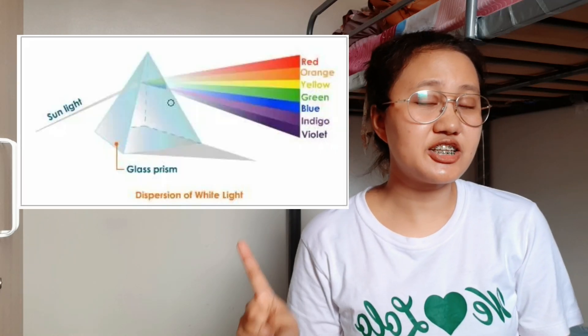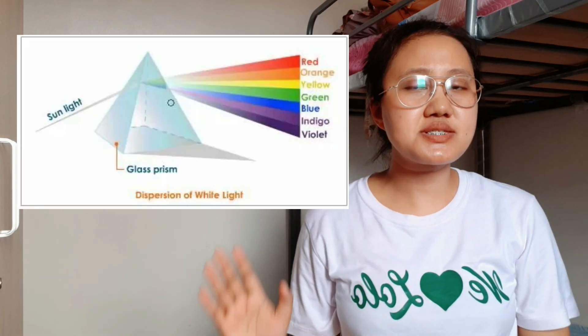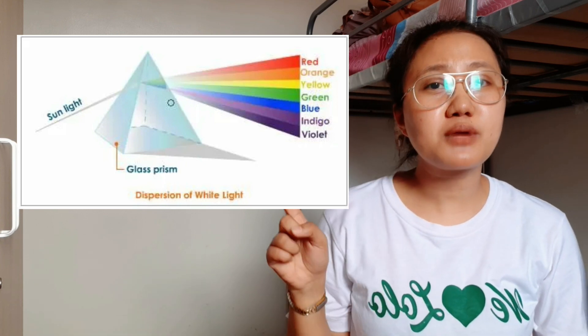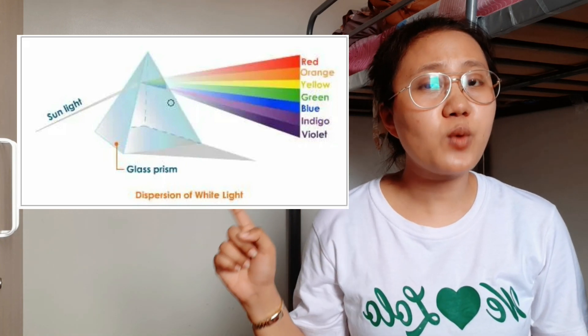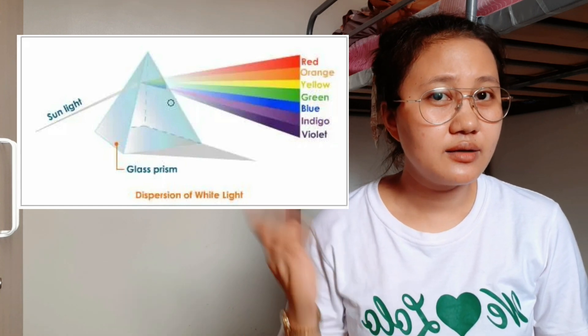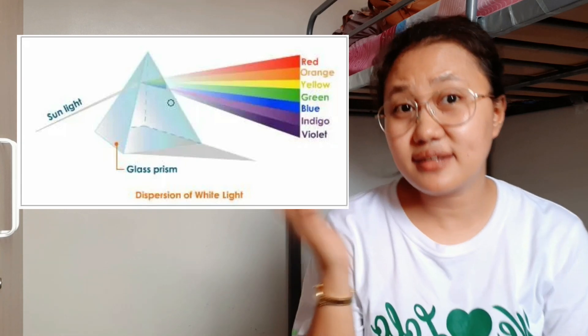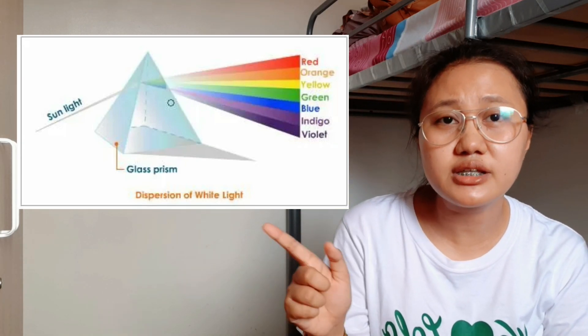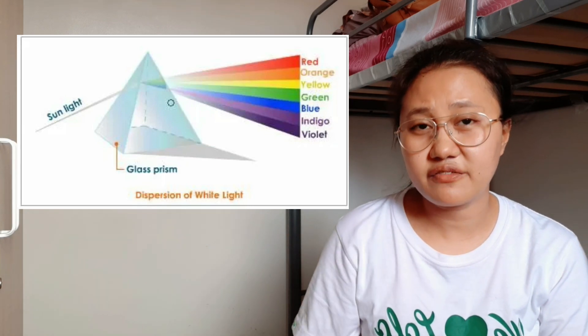So yung nakikita niyo dito sa picture, this is an illustration that shows the dispersion of light. Makikita niyo na may prism. Nung tinamaan siya ng white light, tingnan niyo yung components ng white light na to. Di ba? The ROYGBIV — makikita natin dyan yung kulay ng red, orange, yellow, green, blue, indigo, and violet. The seven colors include red, orange, yellow, green, blue, indigo, and violet.